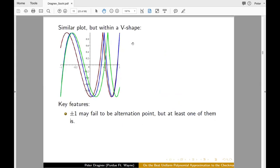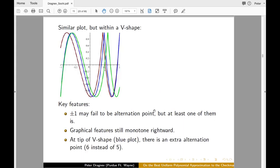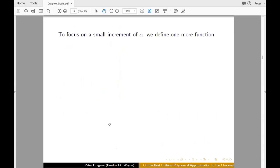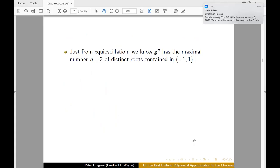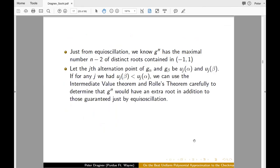So looking at this same picture, now for G alpha, we kind of see that as alpha changes, the oscillation points move as well. A similar plot within a V shape indicates the same thing. Now what happens here, the blue function is actually where we have one extra alternation point. So that's the blue plot. And we have six instead of five alternation. So focusing on small increment of alpha, we will consider a function that will help us. That namely is the difference G alpha x minus G beta x for alpha close to beta, beta close to alpha, beta being bigger than alpha.